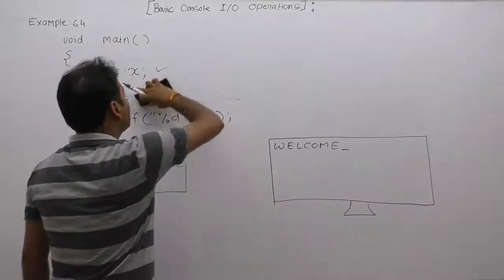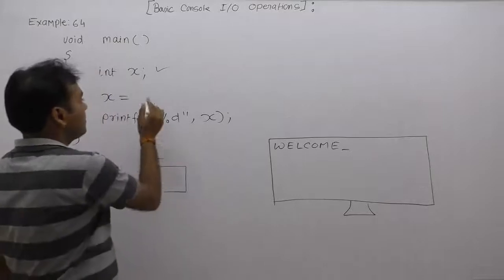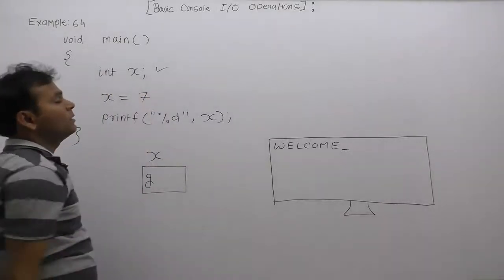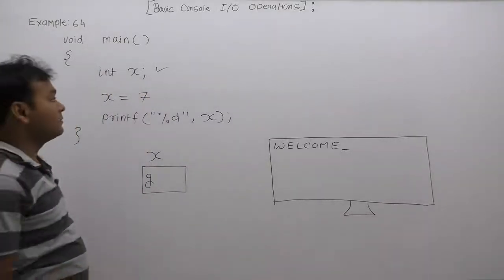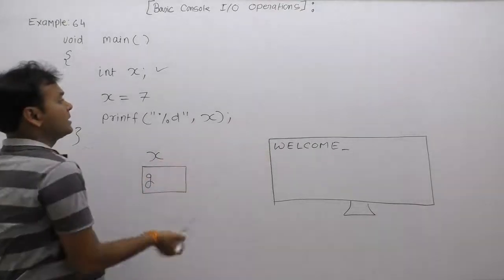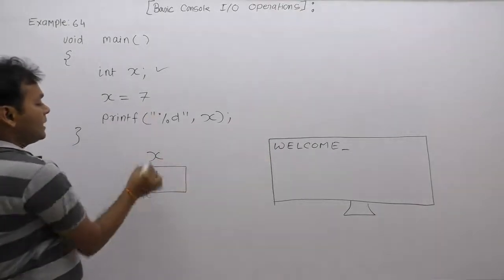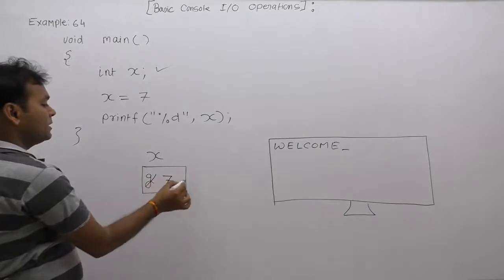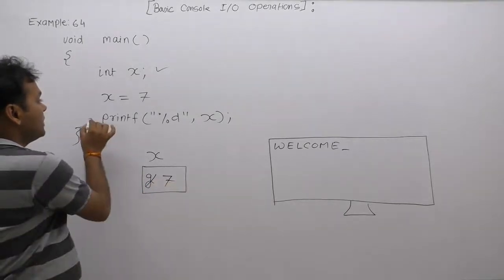It returns the number of displayed characters as seven because the total displayed character is seven. Then the value of x becomes seven. Now garbage is replaced by seven. Using the next printf, we are again displaying the value of x.